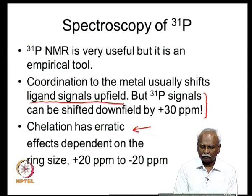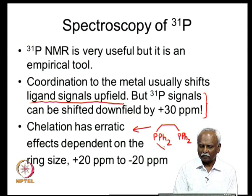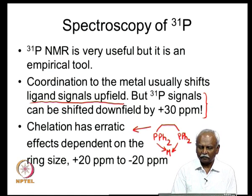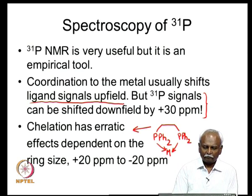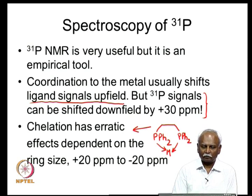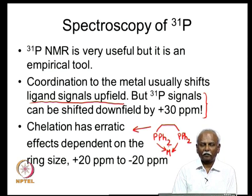For example, with diphenylphosphinoethane — a ligand capable of coordinating to the metal through 2 phosphorous centres to form a chelate ring — the 5-membered ring shifts the signal by +20 ppm, whereas with a single carbon bridge the shift is −20 ppm. Because of this erratic behavior of the chemical shift, it sometimes becomes difficult to interpret the NMR spectrum of phosphorous-metal complexes. However, with prior knowledge of how the chemical shift changes on chelation, it turns out to be an extremely useful tool.